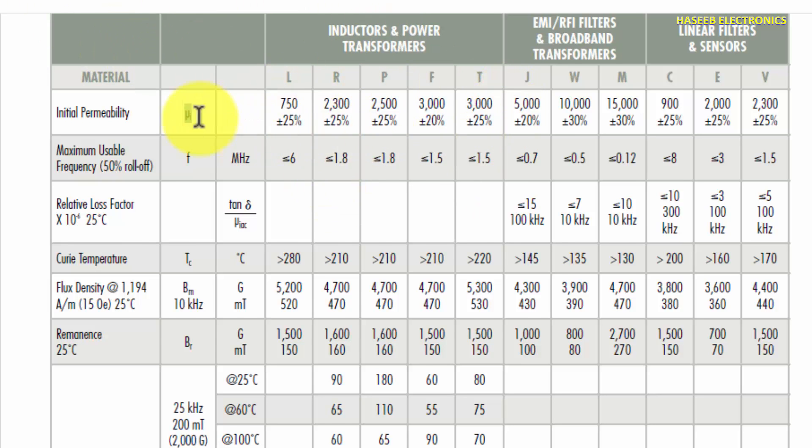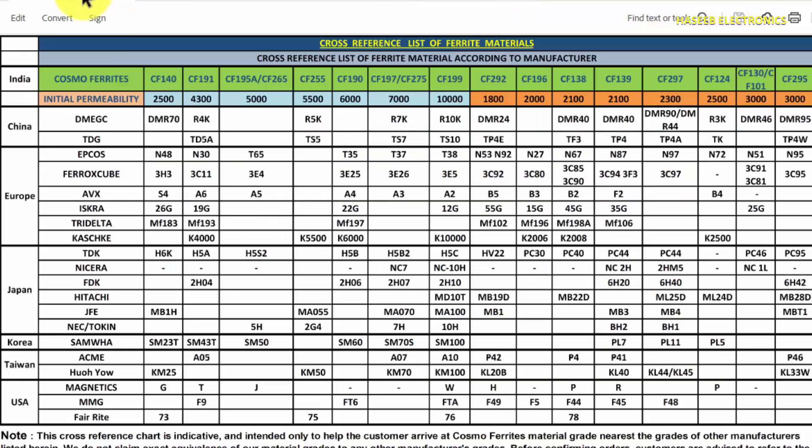There are many cross-reference tables. We can check this one: India Cosmo Ferrites. This is a manufacturer. It has its own numbers. And if we see initial permeability: 2500, 4300, 5000, 5500. There are different categories.